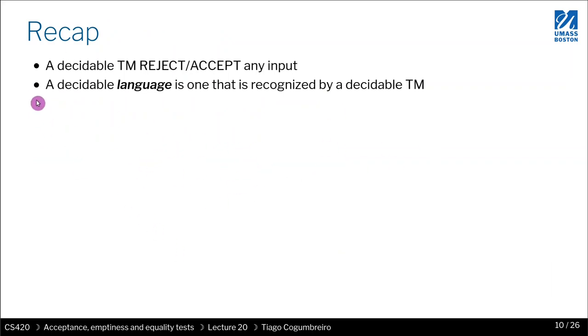Just to recap, a Turing machine is decidable if it rejects or accepts all inputs. If you find a single input where the Turing machine loops, then that Turing machine is not decidable. We say that a language is decidable if there is at least one Turing machine that recognizes it and that Turing machine is decidable. We even say that the Turing machine is a decider.